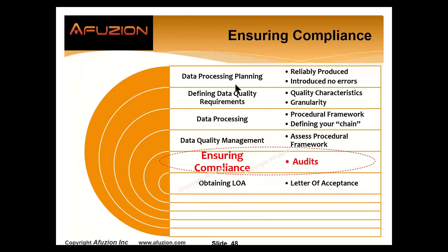You've done your data processing planning, defined your data quality requirements, and can assess what you receive and transmit. You process data according to written documents and have a quality management process that guarantees compliance with proof. Now, number five — the big one: how do you ensure compliance? With audits. And remember, audits are not just reviews — they're subset, process-based reviews.